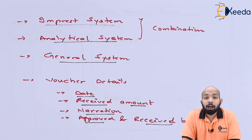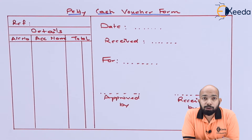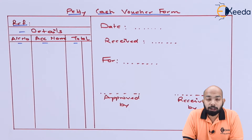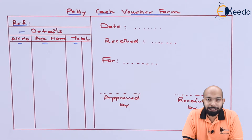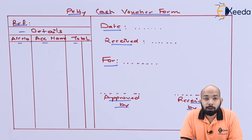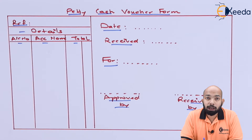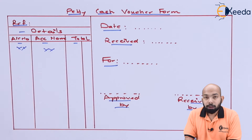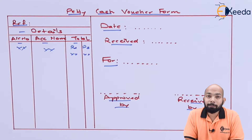Let's go to the next sheet and understand how to prepare this specific voucher. A petty cash voucher form is divided into two parts. The first part gives details about the account number, total amount, and account name. The second part gives details about from whom it has been received, the narration, approved by, and received by details, along with the total amount in both rupees and paise.